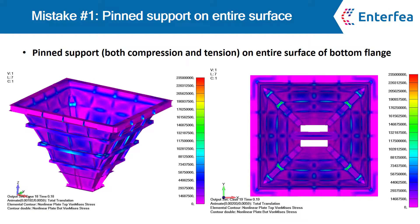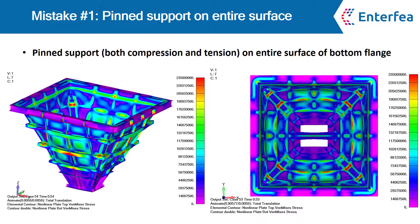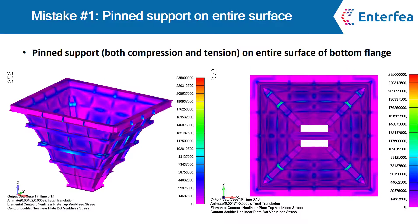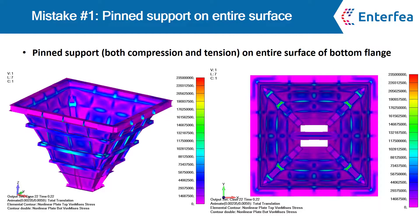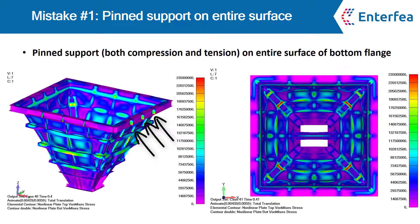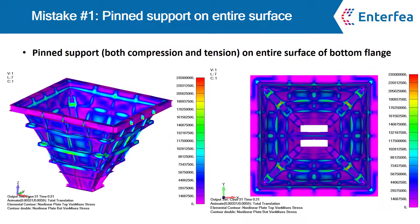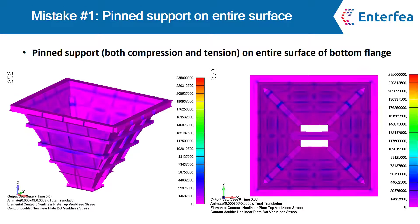Again you see the von Mises stress distribution. Note how little stress there is in the supporting beams. They seem not loaded at all. If you look close enough, you will notice that the only part in stress in the support region are the stiffeners in the supporting beams.